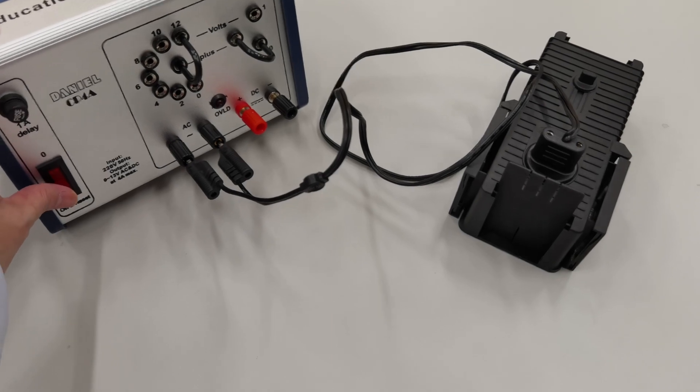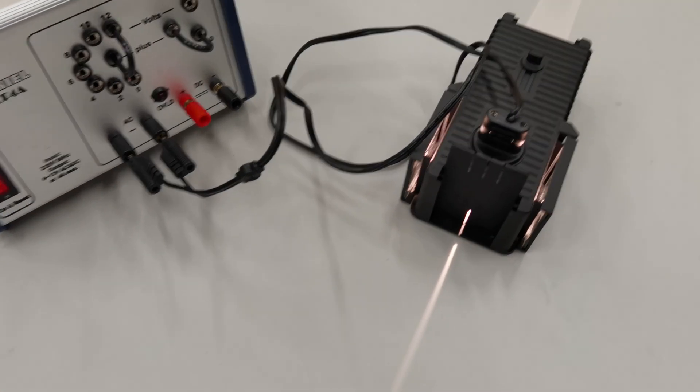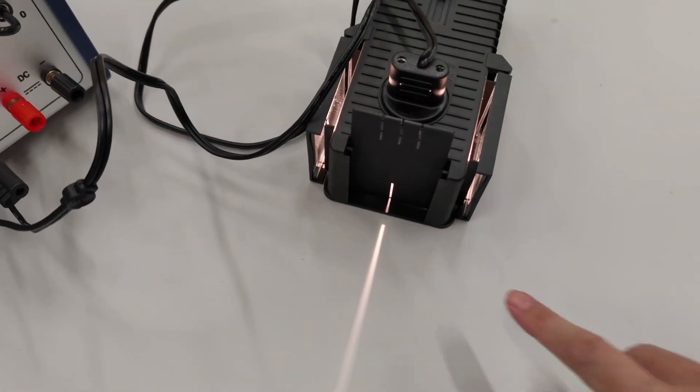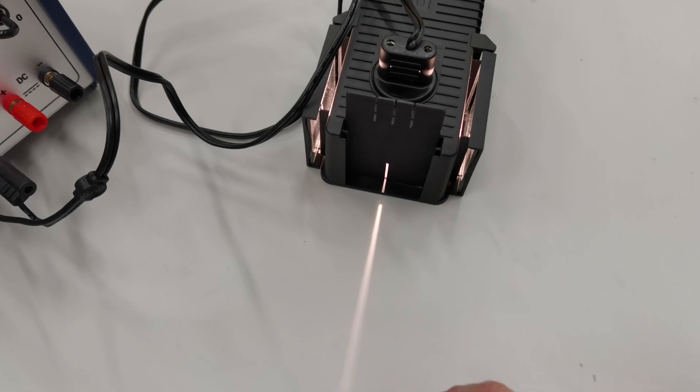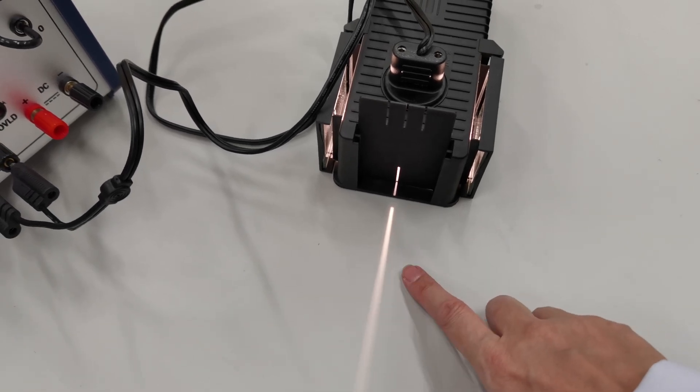So first of all, we must have our ray box set up. And this ray box, as you can see, has been set up with a filter so that we can get a single ray of light. The thinner the ray of light, the better it would be.